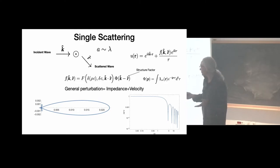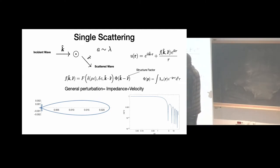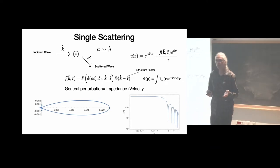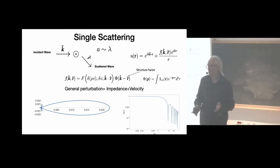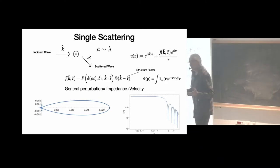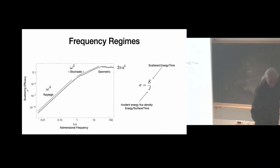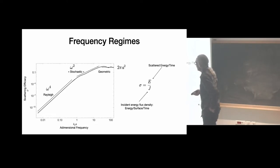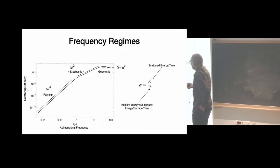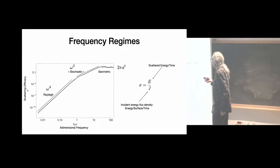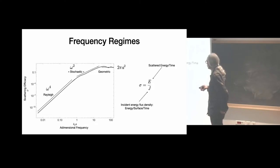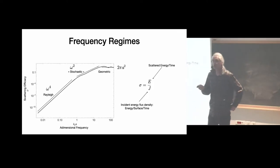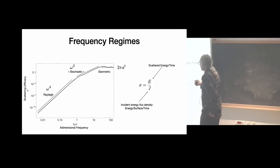I summarize these different frequency regimes. I introduce the scattering cross-section — I call it scattering efficacy. It is the ratio of total scattered energy (integrated over all directions in the far field) to the incident flux per unit surface. This gives a surface that measures the efficacy of the scattering. If the scatterer were absorbing everything, it would be the equivalent absorbing surface.